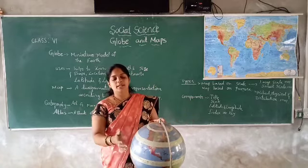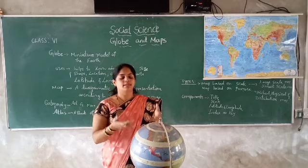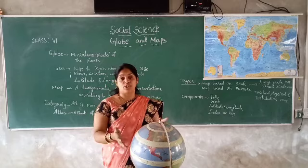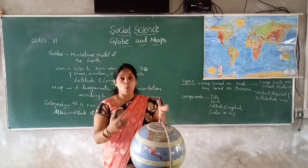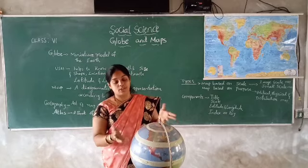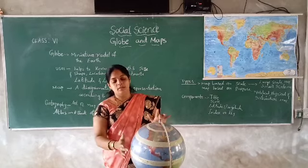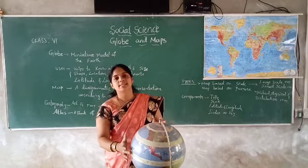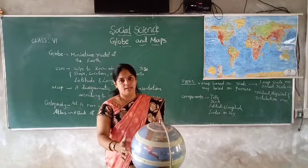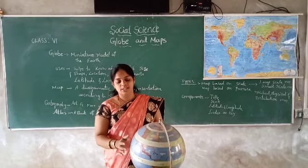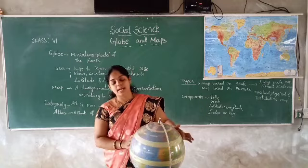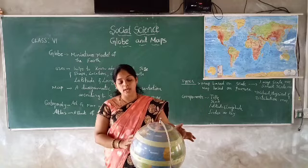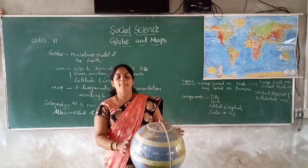Sometimes they will say orange shape, sometimes oval shape. And we are telling it is spherical — or geoid shape.